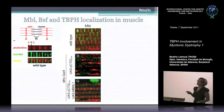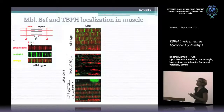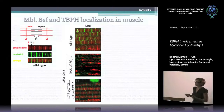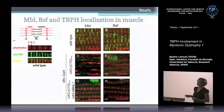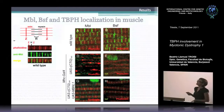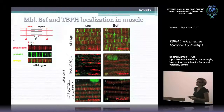When CTG repeats are expressed, muscle-blind goes to the foci because it is retained by the toxic RNA, so the sarcomeric bands are no longer detectable. However, overexpression of human MBNL1 rescues muscle-blind expression in the bands and also gives high expression in the nuclei. This had been shown in mice tissues and also in embryo. With BSF, we found a surprising co-localization with muscle-blind in the sarcomeric bands, and BSF was also mislocated from sarcomeric bands when CTGs were expressed and accumulated in the nuclei. This was also rescued — BSF expression in bands was rescued by human MBNL1 expression.